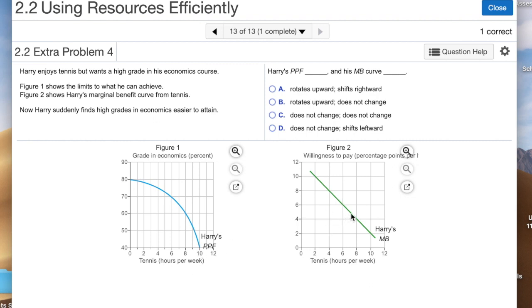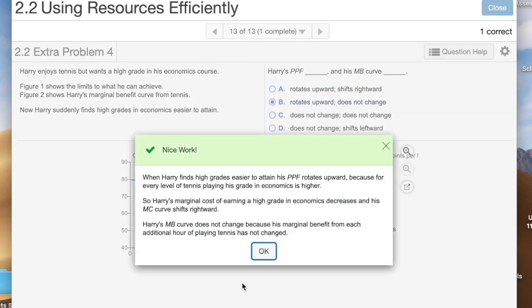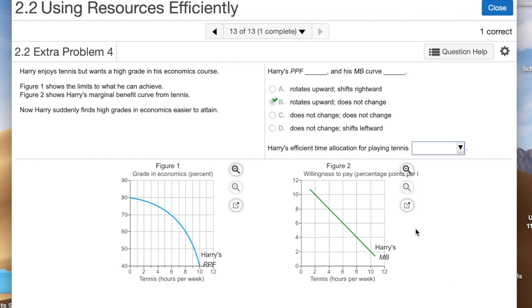The marginal benefit of playing tennis has not changed. So we're going to select an answer of rotates upward and does not change, selection B. You see, higher grades easier to attain, the PPF rotates upward, and his marginal cost is decreasing. So his marginal cost curve, if we had drawn that, it would change, but his marginal benefit curve is not changing. I think that was the last question. So I hope this helps clear up these ideas of marginal cost and marginal benefit.